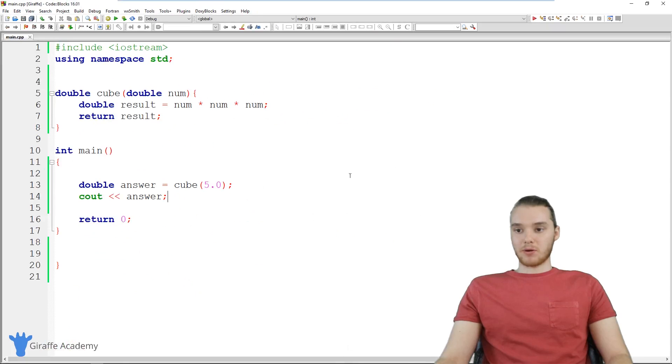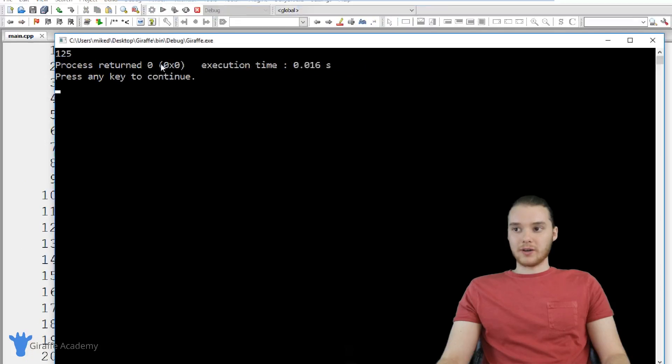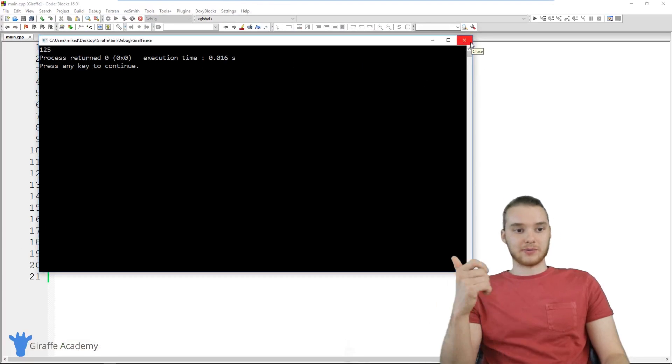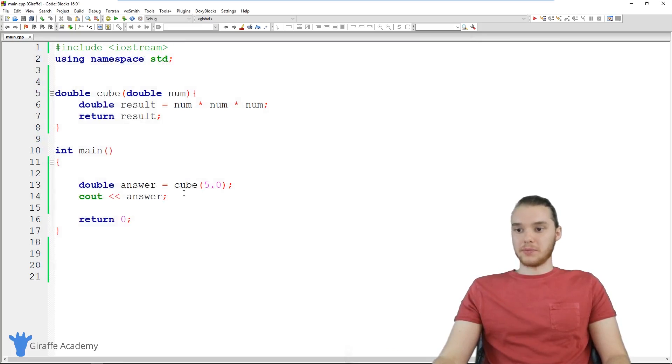So now when I run my program, what you'll see is, we're going to be printing out the result of cubing five. And you'll see over here, we get 125. So five times five is 25, 25 times five is 125. So we are able to cube the number.